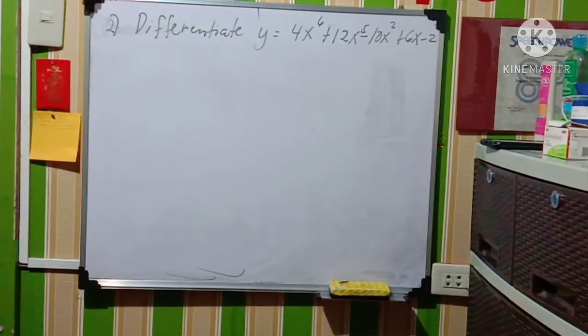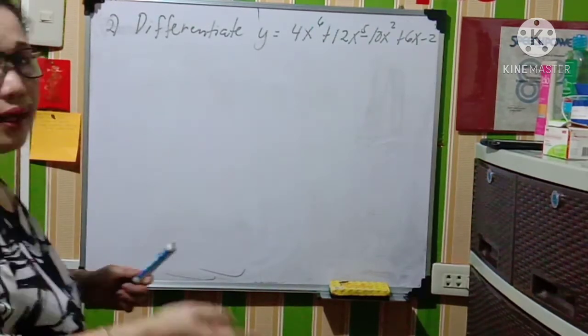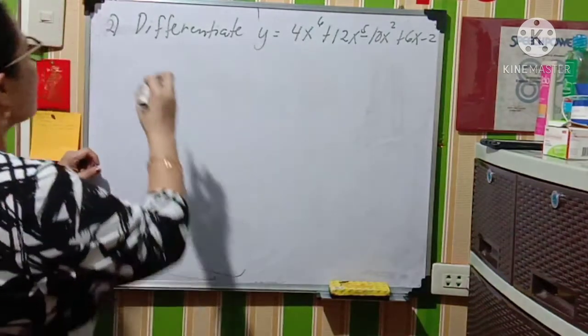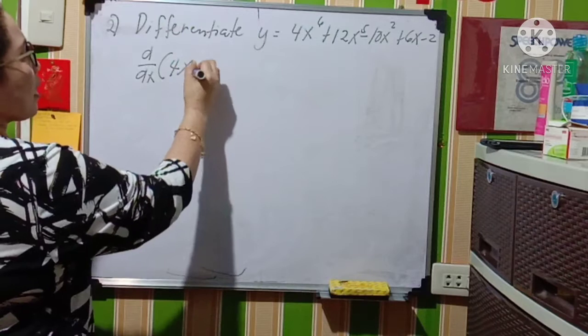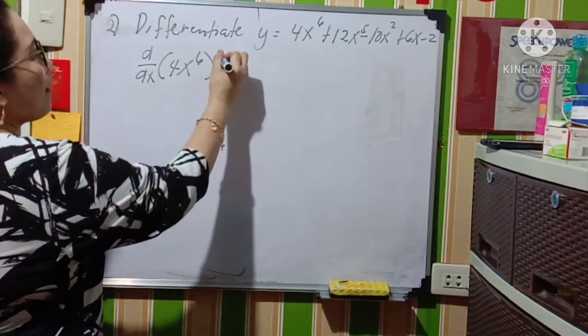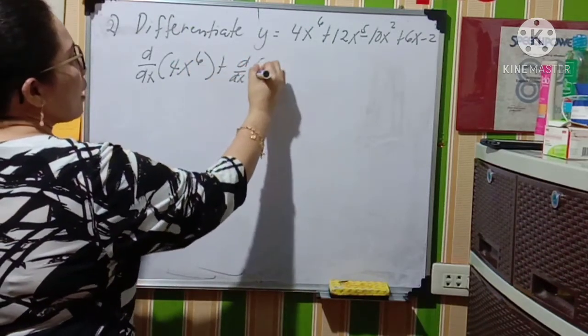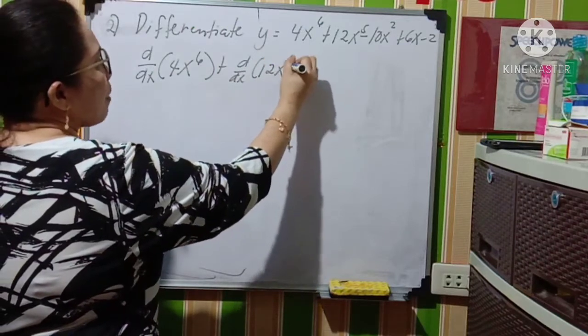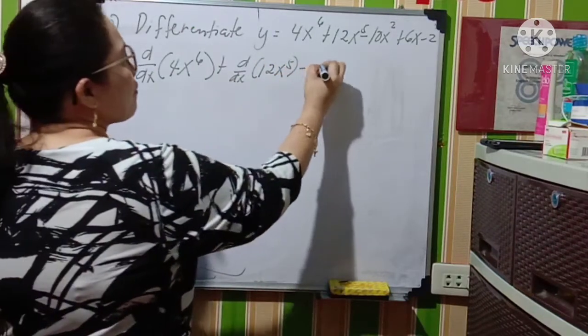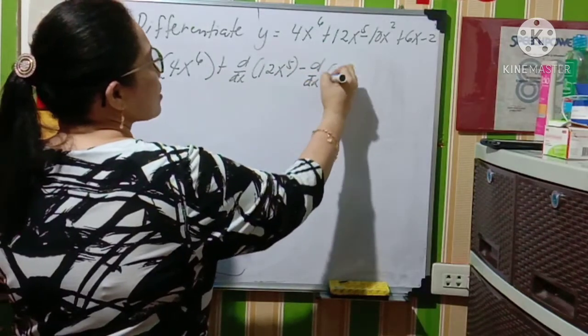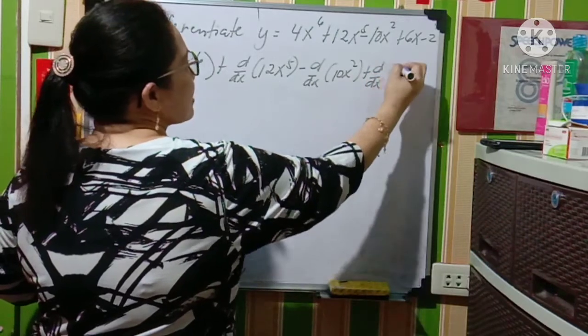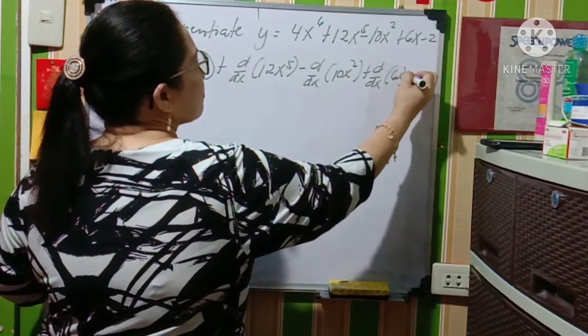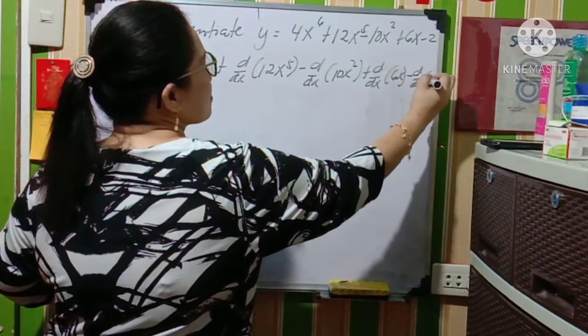So 1, 2, 3, 4, 5. There are 5 terms. So we will get the derivative of this function. So it will be d over dx times the quantity of 4x raised to the 6th power plus the derivative of 12x to the 5th power minus the derivative of 10x squared plus the derivative of 6x and then minus d over dx times 2.